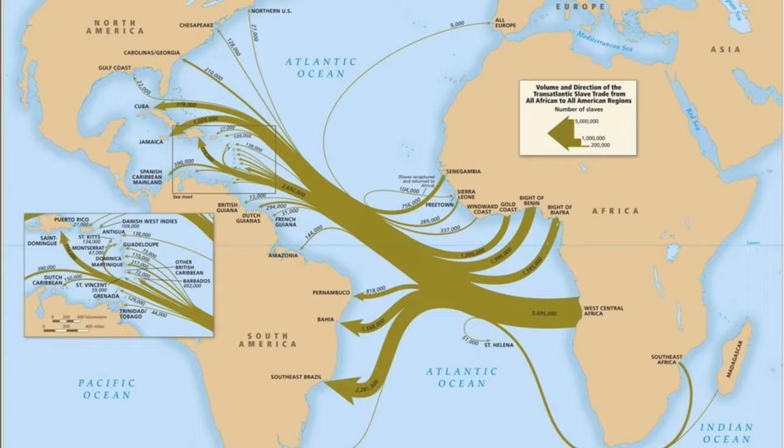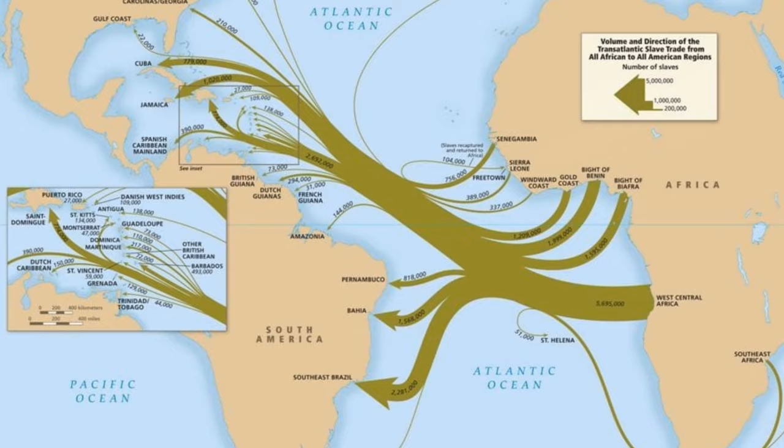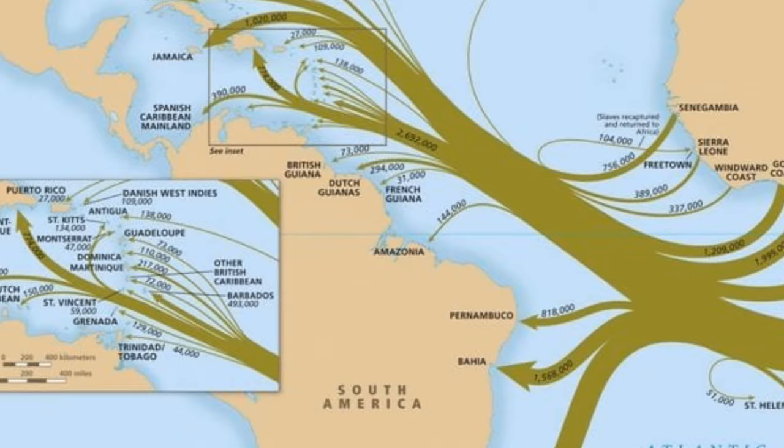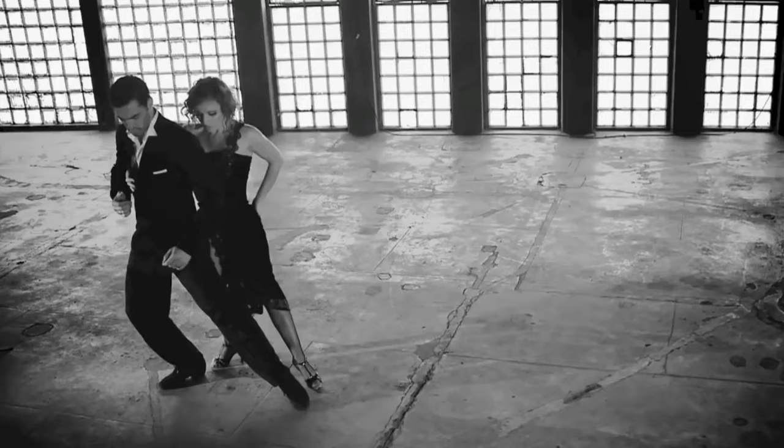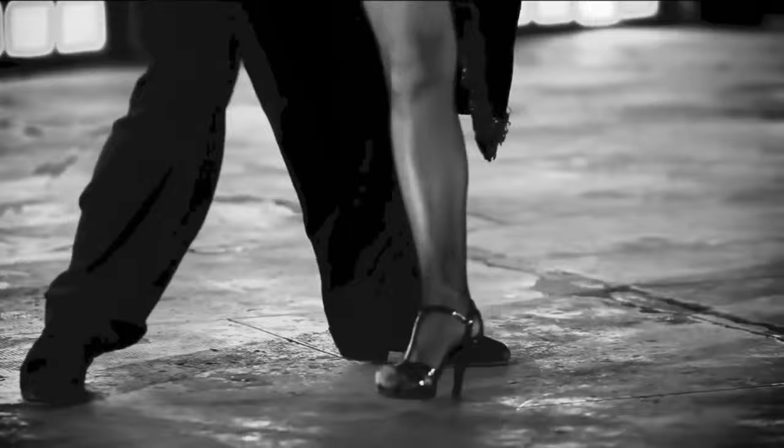Only a small percentage of those enslaved people were taken to what would become the USA, and a much larger portion actually went to Brazil and the Caribbean. We'll be focusing primarily on American jazz for the rest of the story. However, plenty of musical traditions sprouted from these other colonies and would influence the development of tango, samba, salsa and so much more.